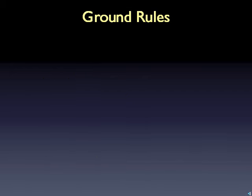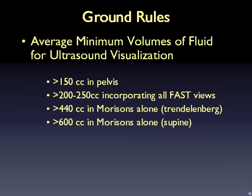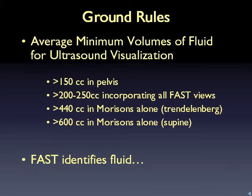Some ground rules. First, this exam is designed to detect large hemoperitoneum. That said, smaller amounts of fluid can sometimes be appreciated. A negative FAST does not rule out all significant abdominal trauma — for that, consider a CT. Second, the FAST can't differentiate between types of fluid. Keep in mind alternate sources, such as ascites or peritoneal distillate, when evaluating for hemoperitoneum.